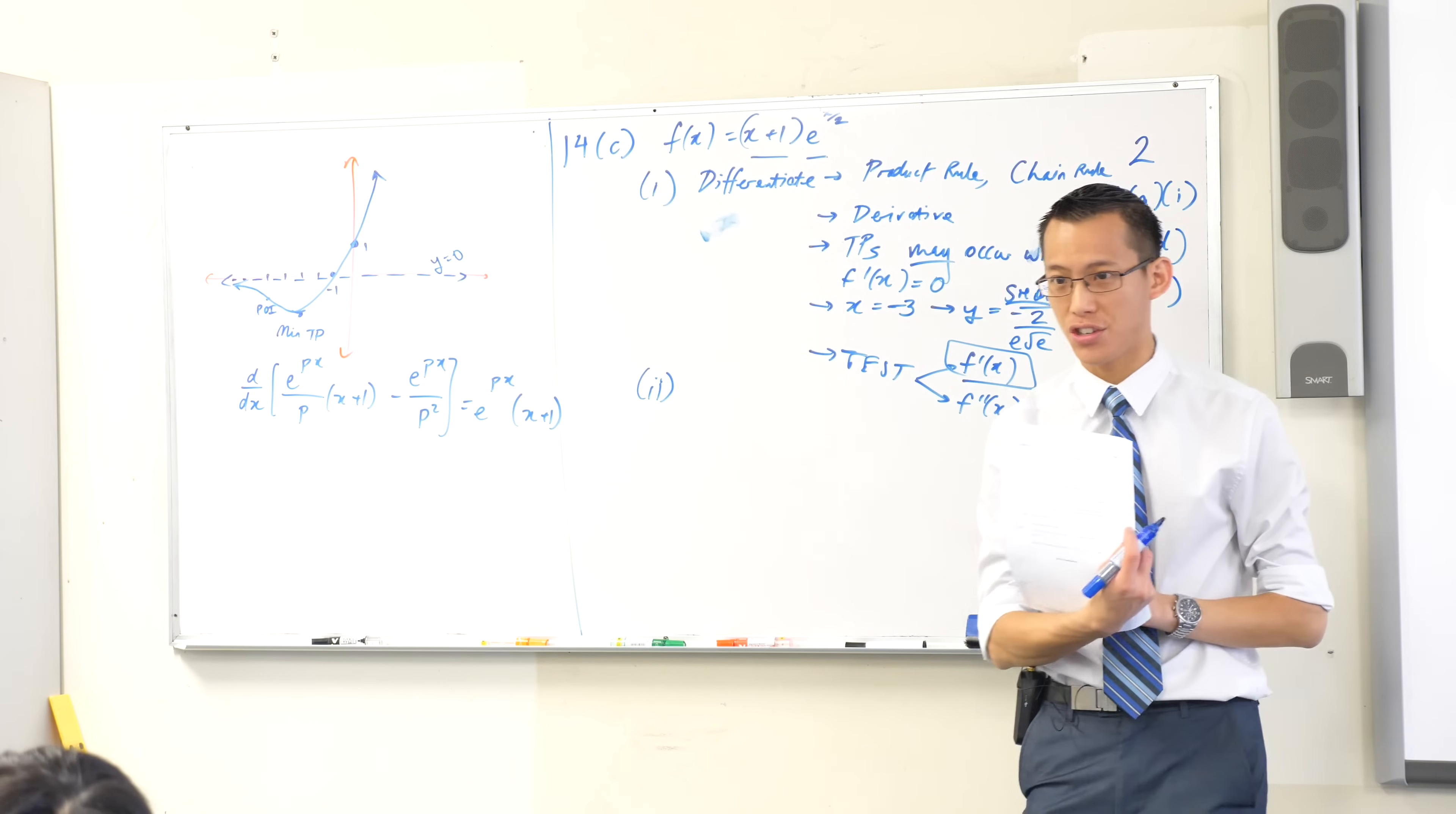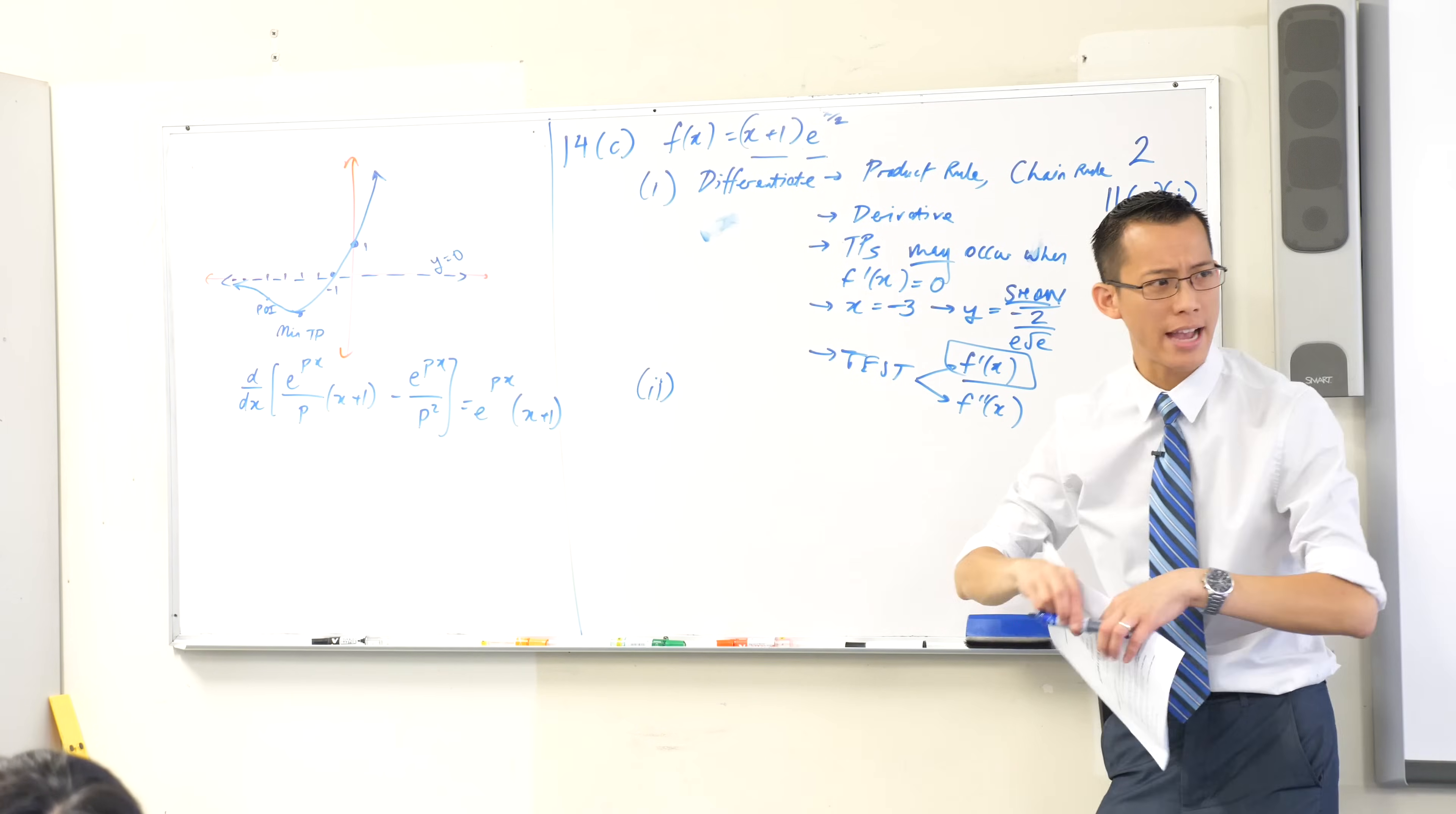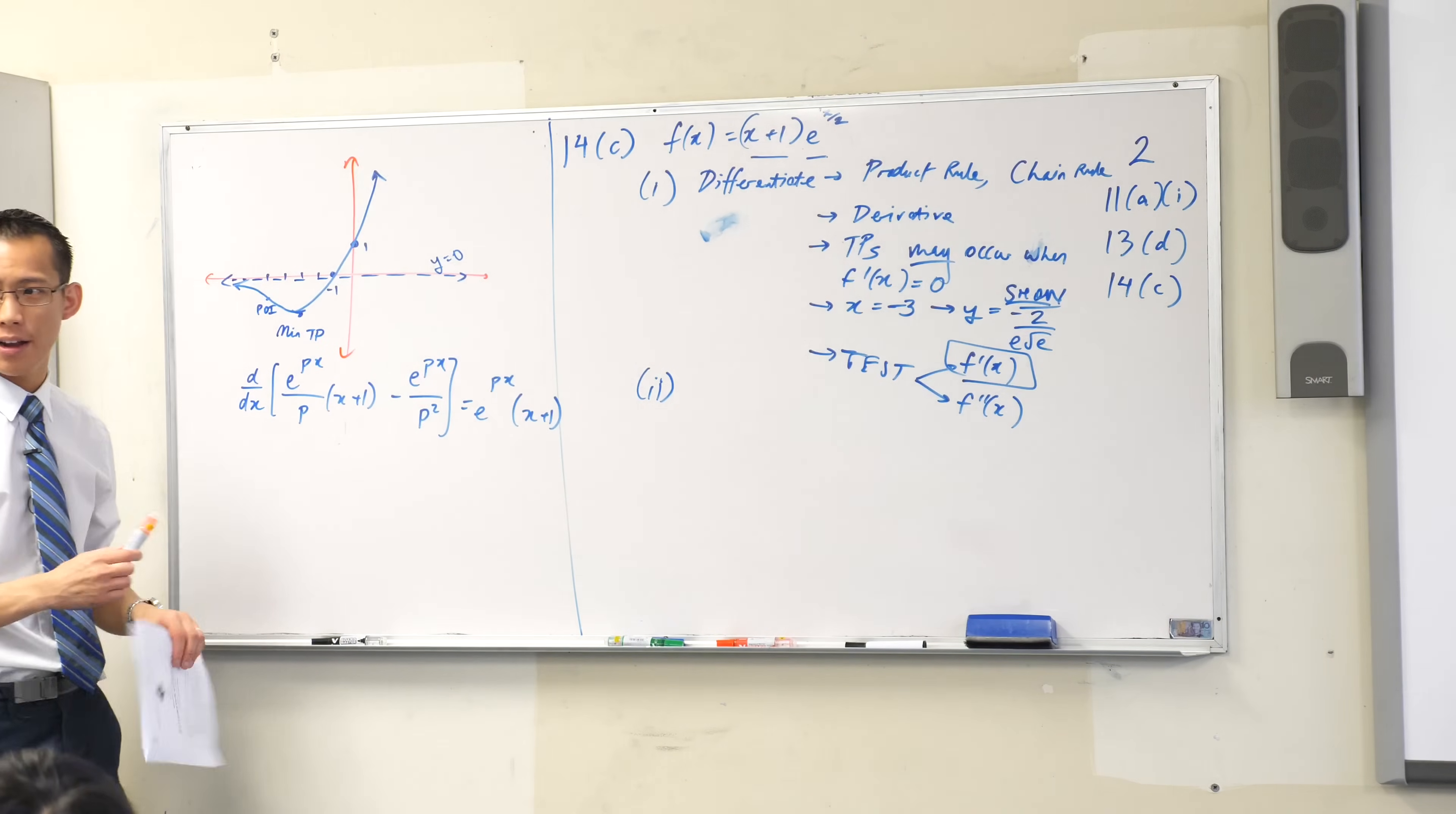Now, nowhere in this question does it actually tell you the method that you need to use to find that area. But look at the area. Where is this area? I haven't actually got it on my diagram yet. Look down at the bottom of the question, or second last line actually. Where would this area go on my diagram?